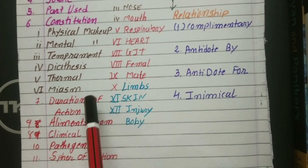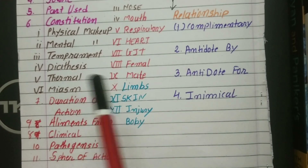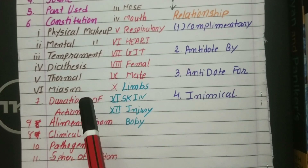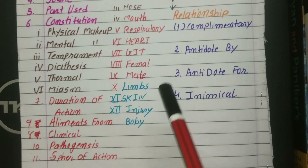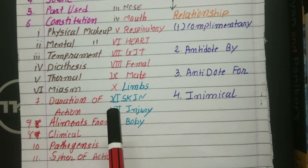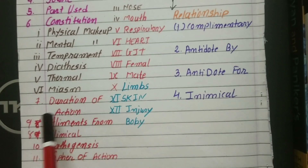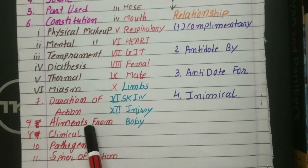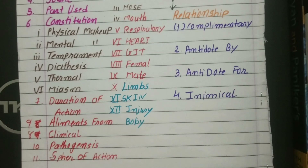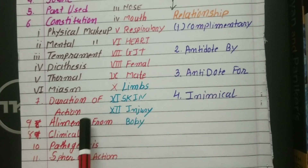Then, duration of action — after we administer this particular drug, how much time it will take to show its action, like two minutes, three minutes, one hour, or two hours. This is the duration of action, and you have to write it. After that, the eighth point is clinical — particularly the disorders or diseases that this drug will cure. We write all those diseases under clinical.